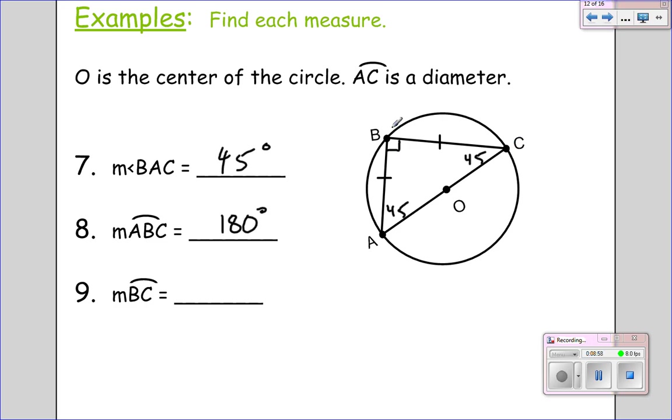And arc BC, well, let's see here. We got an inscribed angle of 45, so we double it for 90 degrees. Let's see if we can get one more in here.